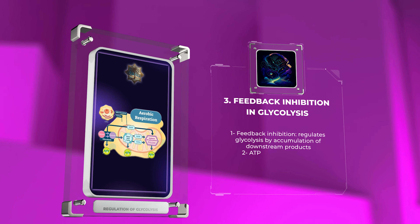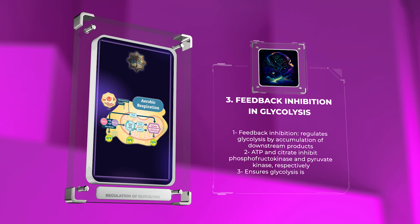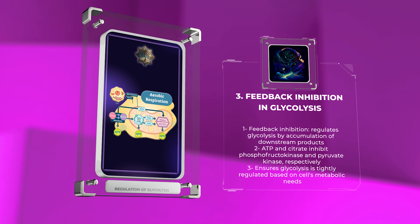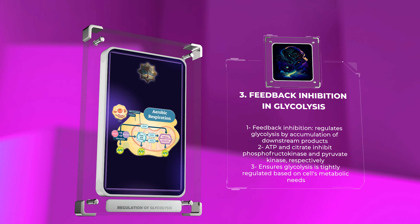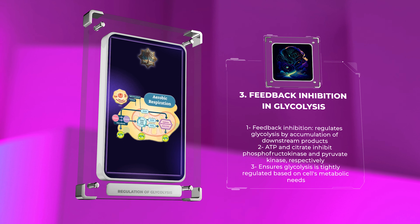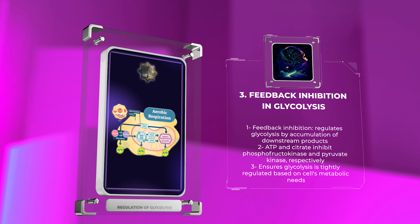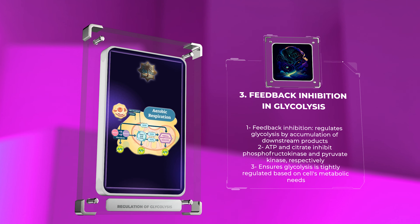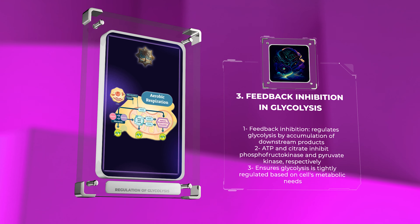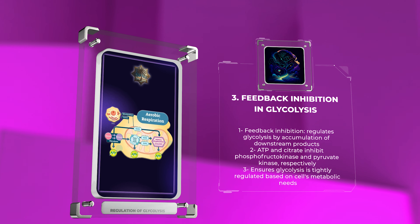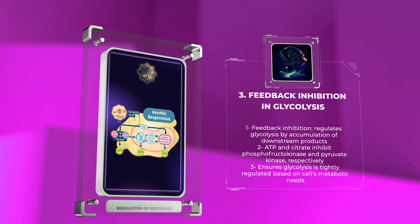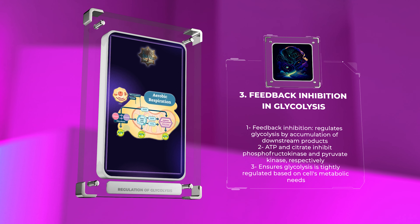Feedback inhibition is another essential mechanism that regulates glycolysis. It involves the accumulation of downstream products, which feed back to inhibit enzymes in the pathway, preventing unnecessary metabolite buildup. For instance, high levels of ATP and citrate inhibit phosphofructokinase and pyruvate kinase, respectively. This negative feedback mechanism ensures that glycolysis is tightly regulated, responding to the cell's immediate metabolic needs.